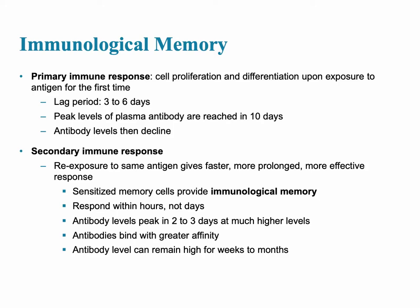Immunological memory is one characteristic that is very important specifically for the adaptive portion of the immune system. There is an initial primary immune response where the body is first exposed to the antigen, and during this time there is a lag period of about three to six days. This is the downfall of adaptive immunity, whereas innate immunity would respond immediately.